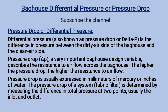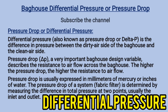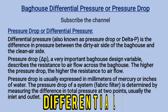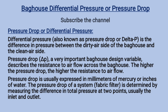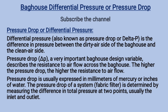What is differential pressure? Also known as pressure drop or delta P, differential pressure is the difference in pressure between the dirty air side of the baghouse and the clean air side. Pressure drop or delta P is a very important baghouse design variable that describes the resistance to air flow across the baghouse.